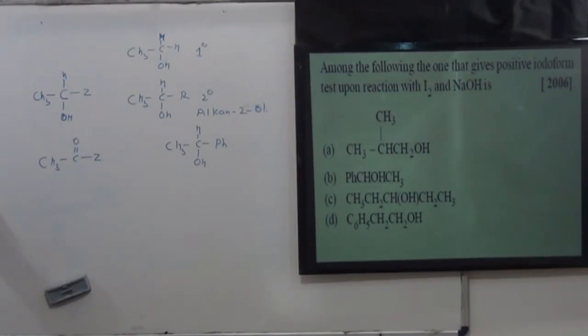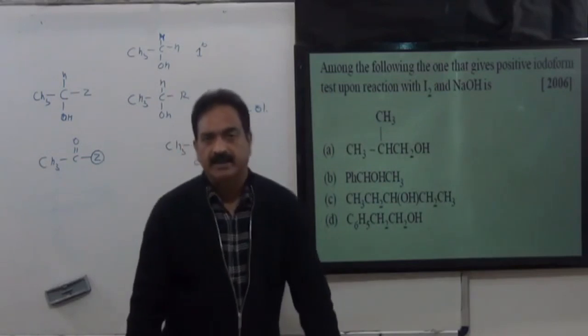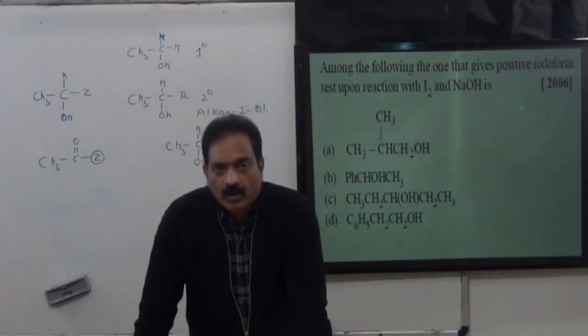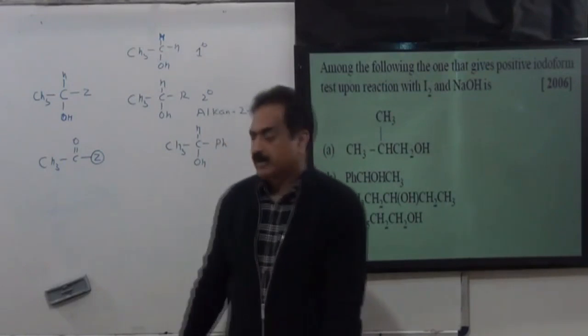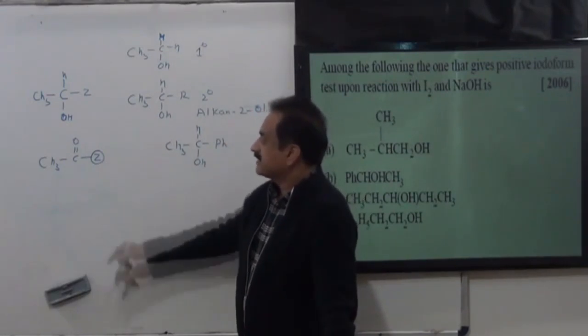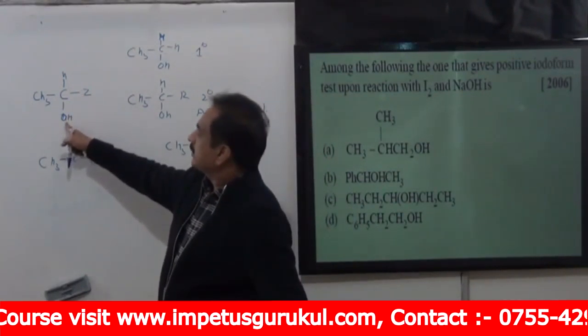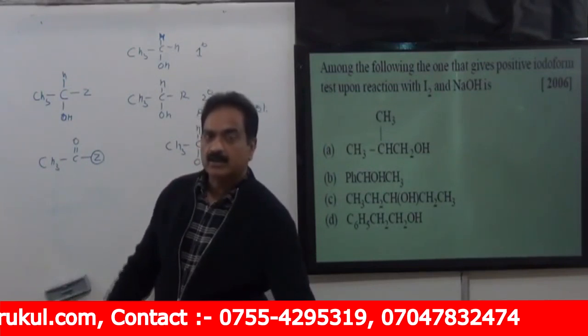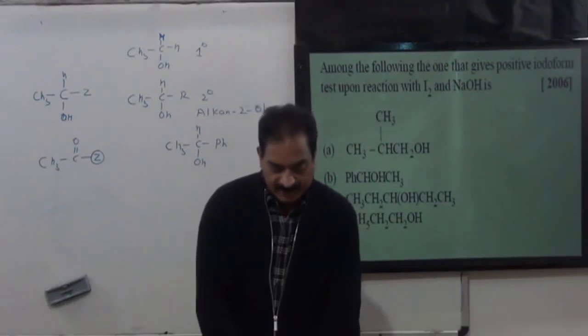So answer is second option. Any other alcohol won't give this test. First, third and fourth options won't give this test. If Z is hydrogen, then ethanol - only ethanol gives this test in aldehydes. And in ketones, if Z is R, then alkynol. And if Z is C6H5, then acetophenone. And you can change OH to X because it can convert to OH in presence of hydrogen and base. So correct answer is second option.